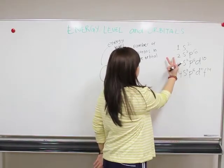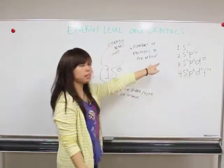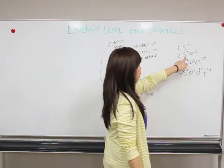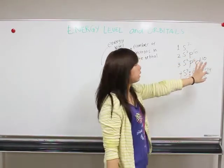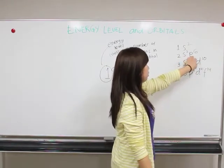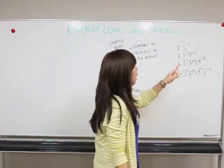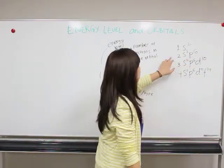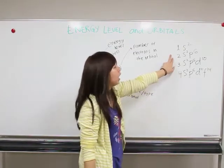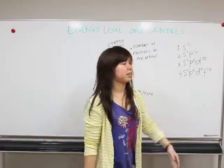And for the second energy level, there is one S orbital and three P orbitals. So for the second energy level, there are eight electrons in maximum.